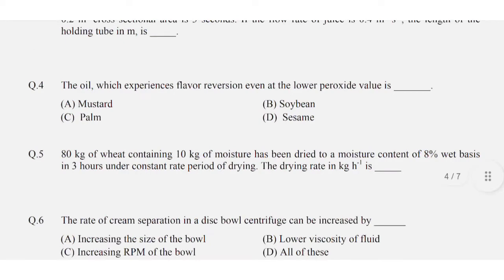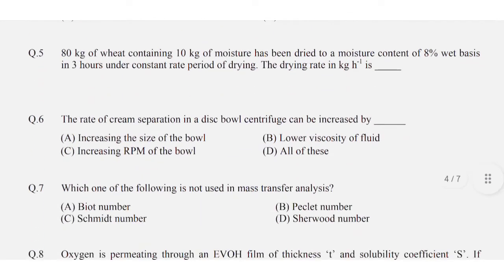Question number five: 80 kg of weight containing 10 kg of moisture — this is a numerical answer type question and the correct answer is 1.3 to 1.4. For question number six, the rate of cream separation in a disc bowl centrifuge can be increased by — option D is correct: all of the above.